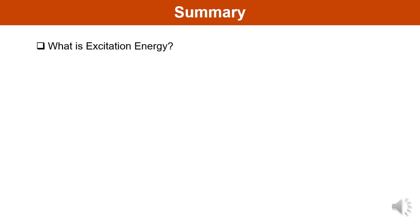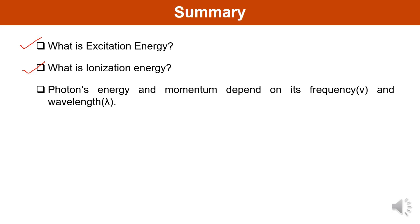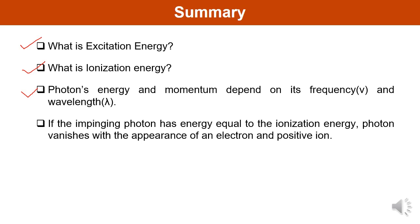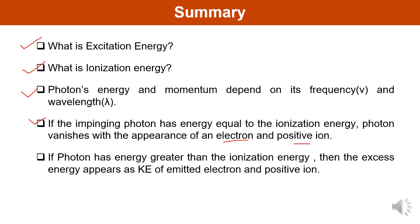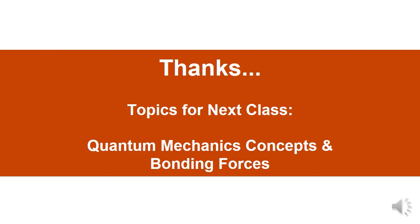In today's lecture, you studied about excitation energy, ionization energy, and the concept that photon energy and momentum depend on frequency and wavelength. When impinging photon energy equals ionization energy, the photon vanishes with the appearance of an electron and a positive ion. When photon energy is greater than ionization energy, the excess energy appears as kinetic energy of the emitted electron and positive ion. The topic for the next class is Quantum Mechanics, Concepts, and Bonding Forces. Thank you.